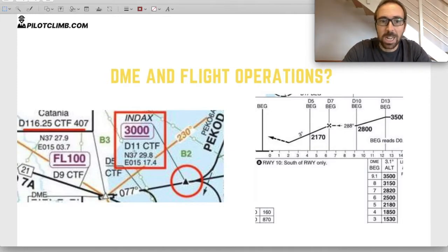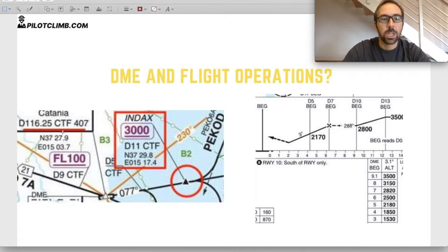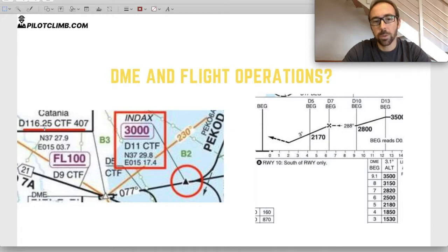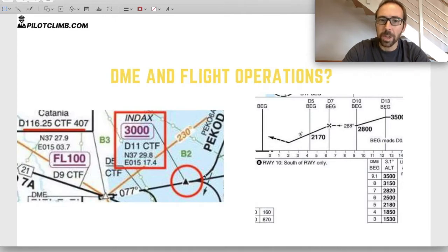The chart shows D11 CTF, meaning INDEX is at 11 nautical miles from Charlie Tango Foxtrot. Charlie Tango Foxtrot is co-located with the airport, with a DME frequency of 116.25. So the pilots know that if they leave the airport on the 077 radial from the VOR and fly all the way down to 11 nautical miles, that is exactly the INDEX point, and from there they can turn left. This is an example of how we use DME during departure.